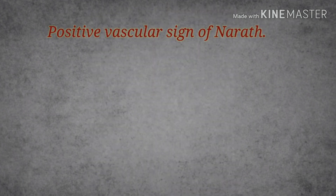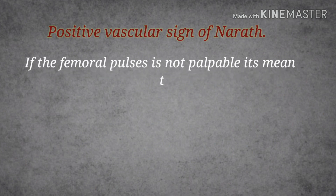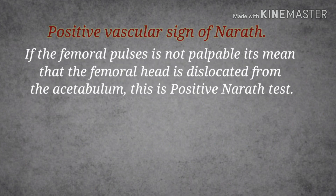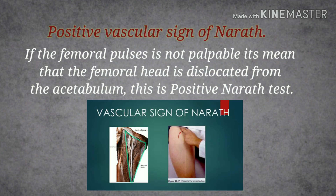Finally, we discuss the positive vascular sign of Narat. Whenever there is a hip dislocation, we need to check the pulsation of the femoral artery. A positive Narat's sign means there is no pulsation of the femoral artery in the femoral triangle, indicating vascular compromise.